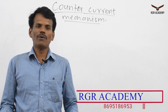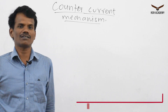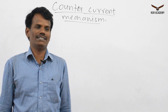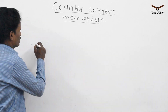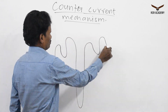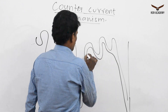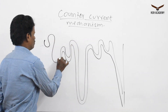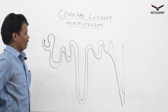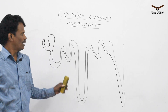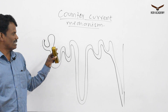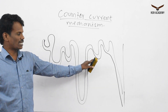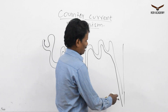The important organ in the excretory system is the kidney, and the structural and functional unit of the kidney is the nephron. Nephron consists of various regions: the glomerulus, proximal convoluted tubule, Henle's loop, distal convoluted tubule, and the collecting duct.